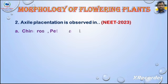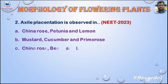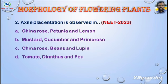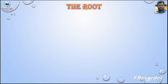Question 2: Axile placentation is observed in — asked in NEET 2023. Options: A) China rose, petunia and lemon, B) mustard, cucumber and primrose, C) China rose, beans and lupin, D) tomato, dianthus and pea. Answer: Option A — China rose, petunia and lemon.